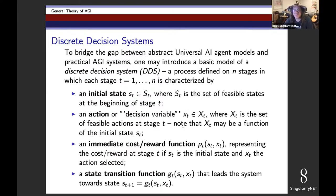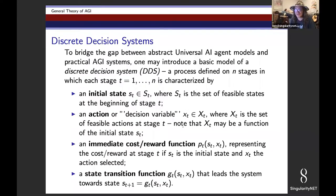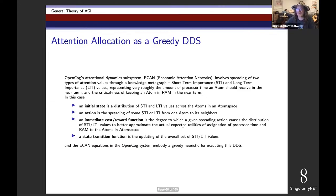This high-level view of decision systems encompasses things like AIXI or a Gödel machine if you define things correctly. The issue there is that the list of possible actions is very, very large, and the evaluation of the estimated reward or cost of each action is very, very complicated. But this formalism also encompasses a lot of more realistic stuff.